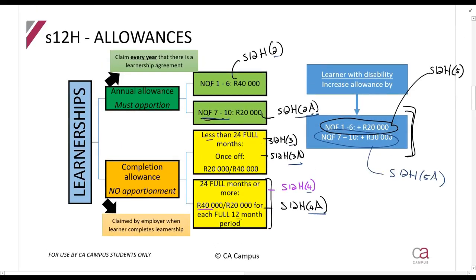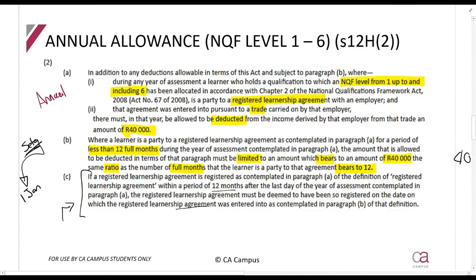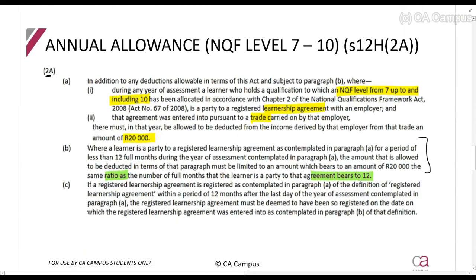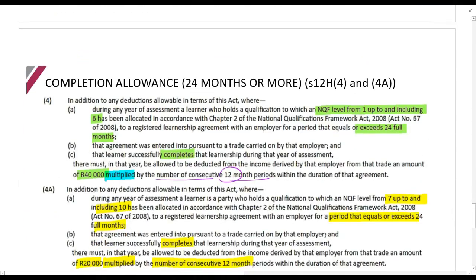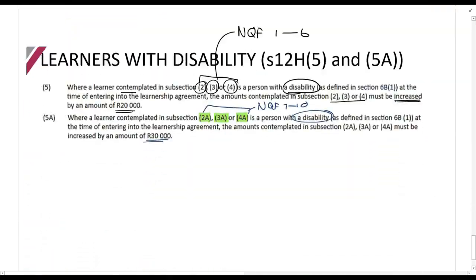This is a straightforward section if you flag it correctly in the Act. I would recommend highlighting NQF 1 to 6, the registered learnership agreement, and the deductible amount. Remember: section (2) is the annual allowance; section (3) is where we start talking about completion — look for the word 'completed' and 'less than 24 full months'; and for section (4), look for 'completed' and 'exceeds 24 full months'. That's how I'd recommend you flag it for studying.